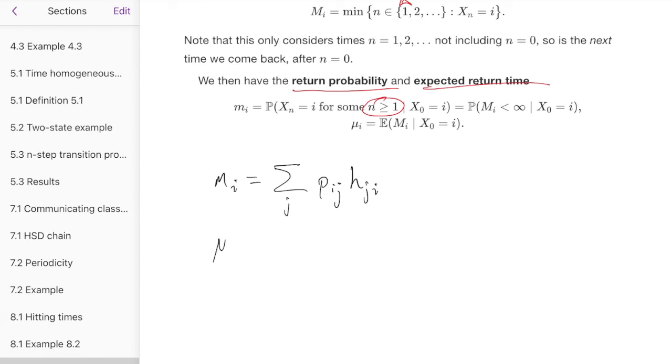And similarly, for expected return time, well, the current time period is a 1+, of course, as always, and then condition on where we go to next. So with probability pij, we'll come to some state j, and then by the Markov property, we're starting all over again, and we want to know the time from that j back to i. That's e to ji.